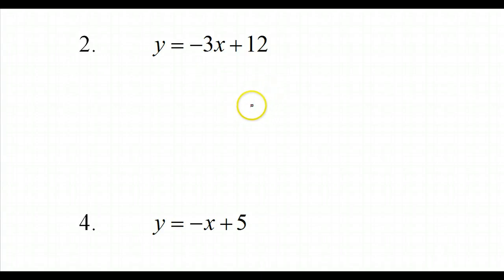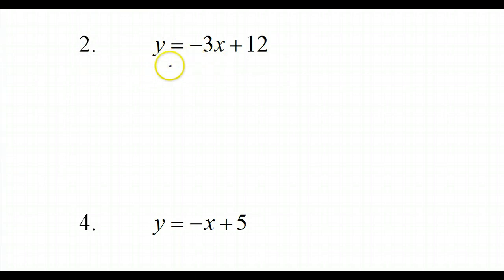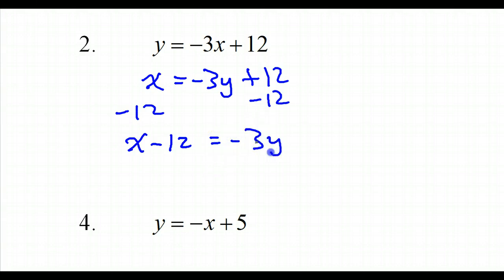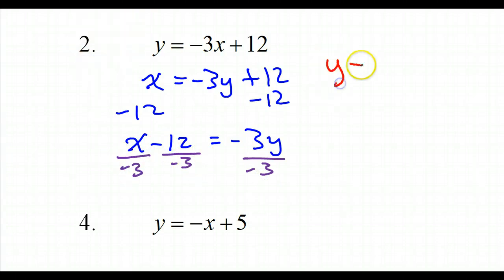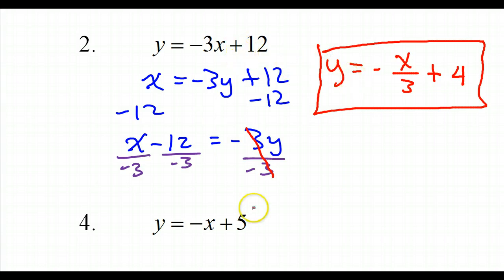These are going to be very similar, so I'll run through them quickly. On this one, again, switch the x and the y, solve for y. So this is going to be x equals negative 3y plus 12. Subtract 12 from both sides: x minus 12 equals negative 3y. Divide everything by negative 3, and that gives me negative x over 3 — and since a negative divided by a negative is a positive — plus 4. That is the equation of the inverse of this original function.